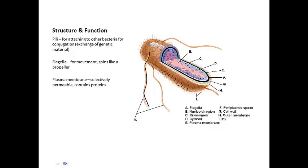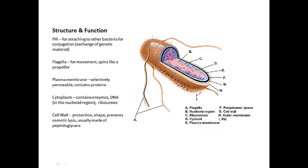They have a plasma membrane, which is selectively permeable. They have a cytoplasm. And they have a cell wall. The cell wall is chemically different from the cell wall of a plant or a fungus. Their cell wall is for protection — it helps the bacteria maintain its shape and it prevents osmotic lysis. Osmotic lysis is the bursting of a cell due to osmotic pressure. Water tends to flow into the bacteria because there's a higher solute concentration inside, so with all that water flowing in it has the potential to burst. The cell wall prevents that from happening.